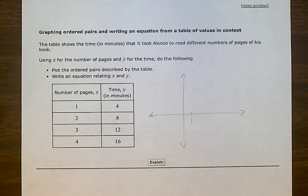Graphing ordered pairs and writing an equation from a table of values in context. The table shows the time in minutes that it took Alonzo to read different numbers of pages of his book. Using x for the number of pages and y for the time, do the following: Plot the ordered pairs described by the table and write an equation relating x and y.